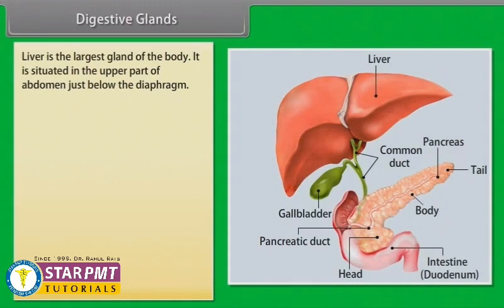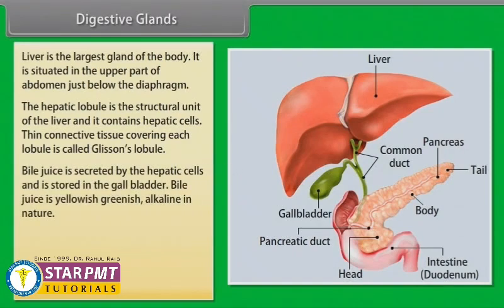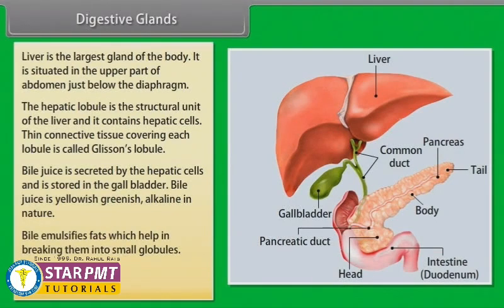The liver is the largest gland of the body, situated in the upper part of the abdomen just below the diaphragm. The hepatic lobule is the structural unit of the liver and contains hepatic cells; the thin connective tissue covering each lobule is called Glisson's capsule. Bile juice is secreted by the hepatic cells and stored in the gallbladder; it is yellowish-green and alkaline, and emulsifies fats to break them into small globules. The duct of the gallbladder and hepatic duct form the common bile duct.